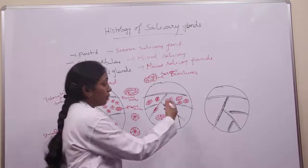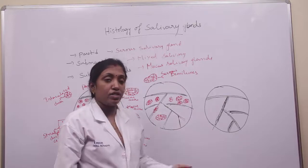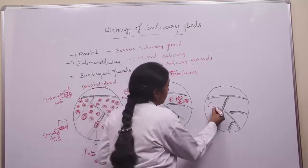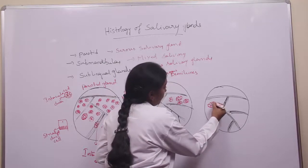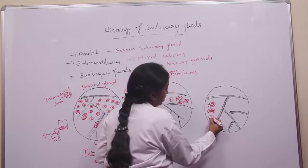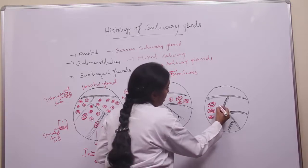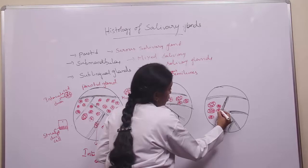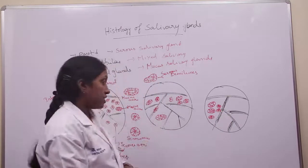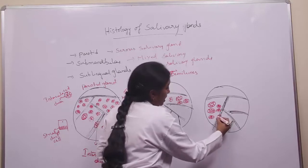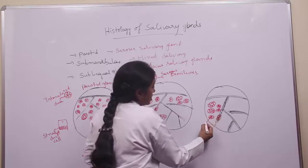Coming to the sublingual gland — it is covered by a capsule, and trabeculae enter the gland and divide it into more number of lobes and lobules. The sublingual gland is an example of a mucous salivary gland; it consists of more number of mucous acini, which have a large lumen and the nucleus is flattened and situated at the base. Along with the mucous acini you will be able to see intercalated ducts lined by simple cuboidal epithelium, striated ducts lined by columnar epithelium with basal striations, and interlobular ducts lined by simple columnar epithelium.